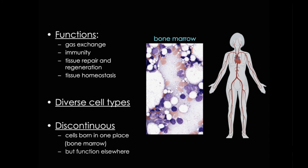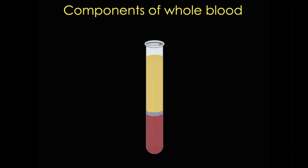I'll cover the signaling systems and hematopoiesis in my other videos. To start, let's briefly examine the components of blood. We know blood consists of cells that are suspended in fluid extracellular material called plasma. So we'll take a look at this cartoon, which shows collected blood that has been prevented from clotting and separated into layers by centrifugation.